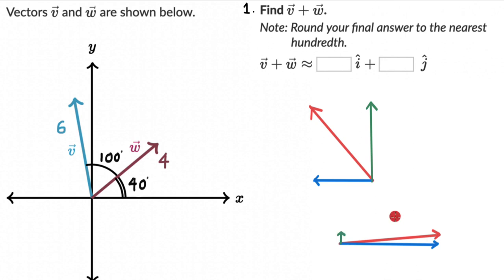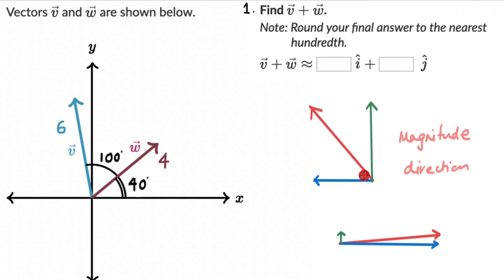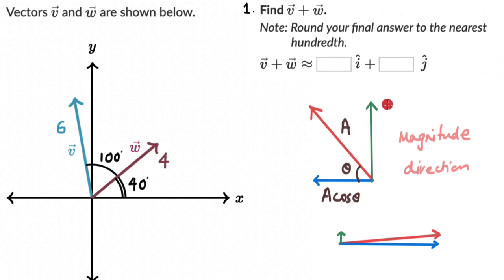We can figure out the magnitude of these components if we know the magnitude and direction of the vector. If the angle is theta and the magnitude is 'a', then the horizontal component — adjacent to theta — is a cos theta, and the vertical component — opposite to theta — is a sin theta.